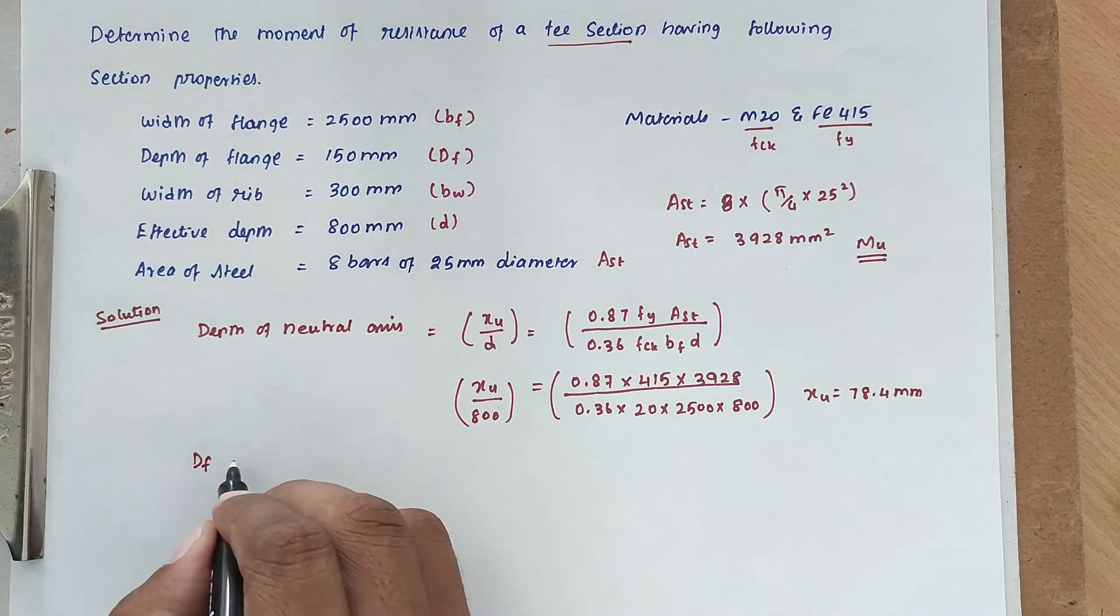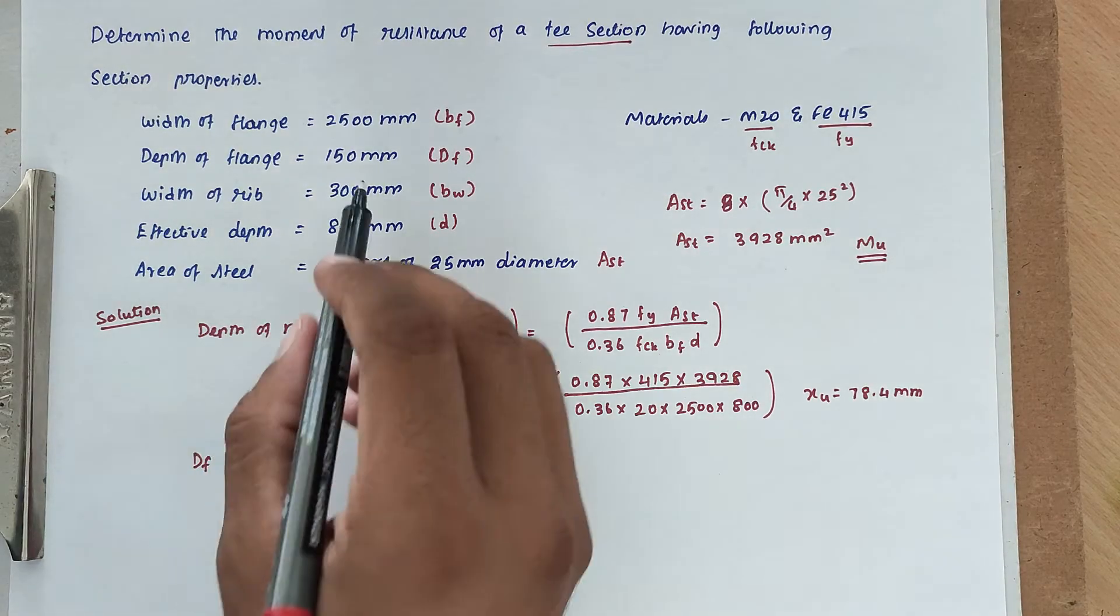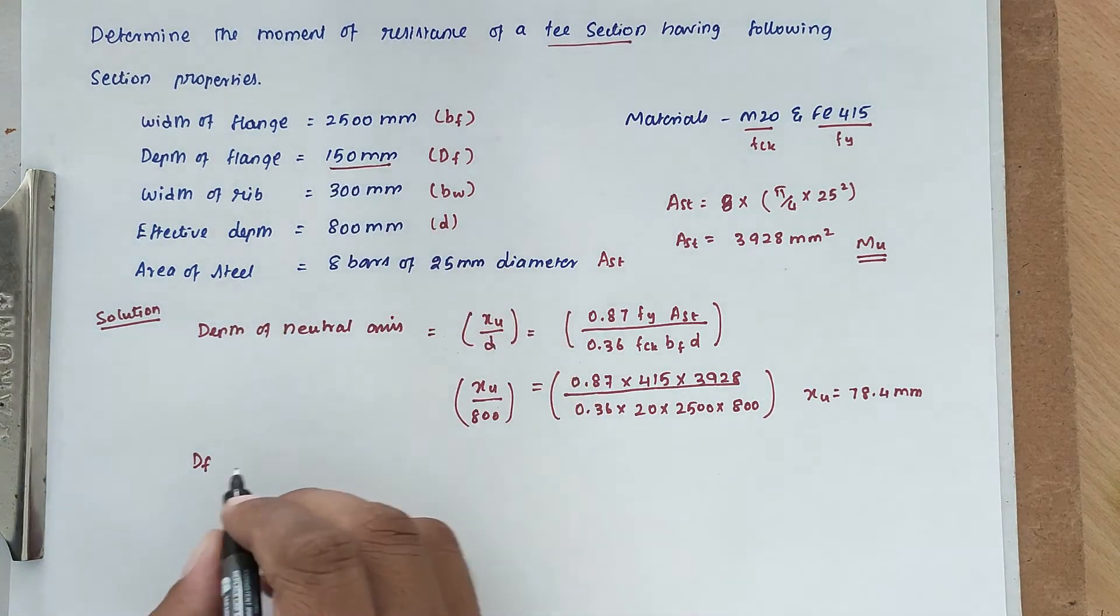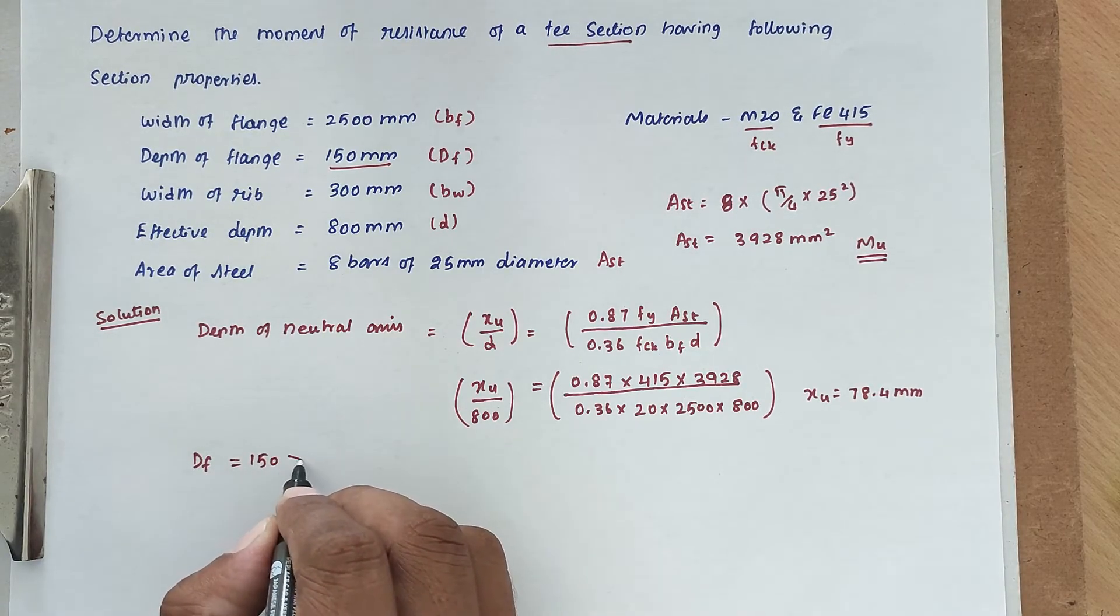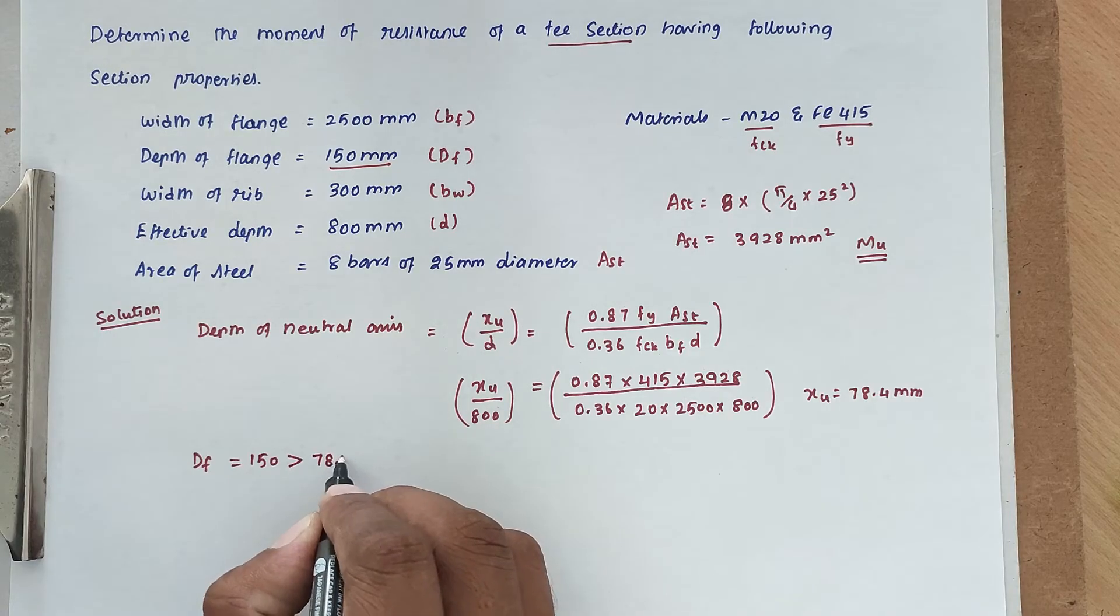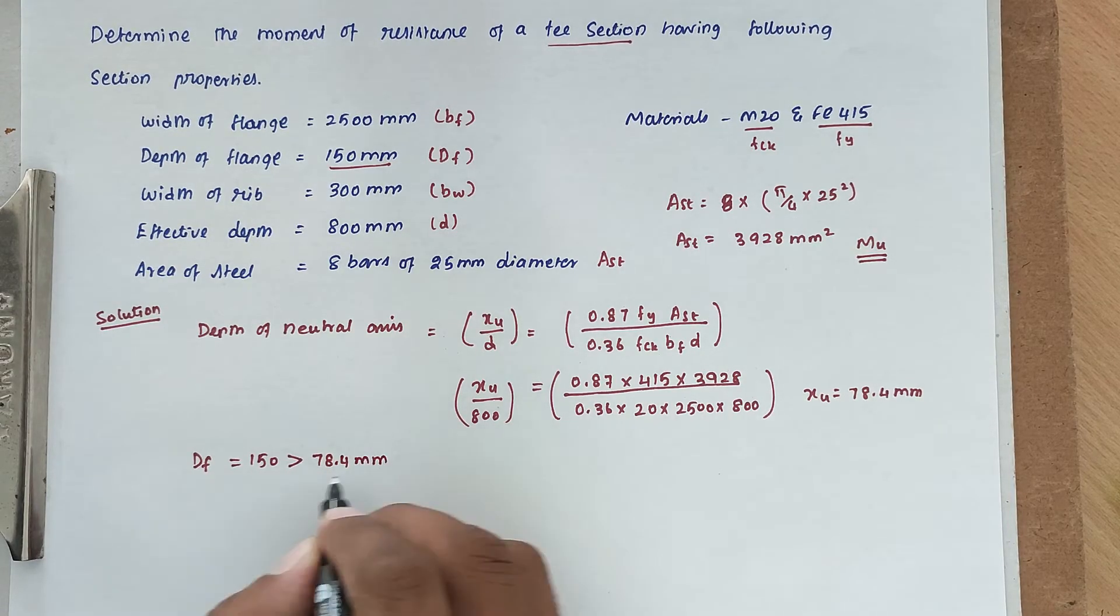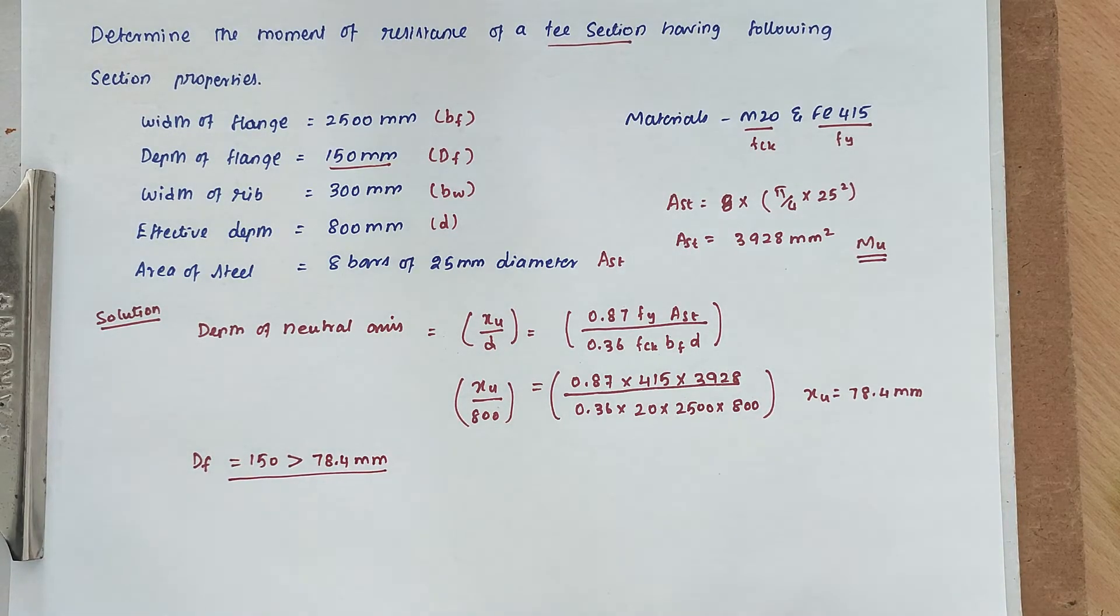Now the depth of flange is 150 mm. So the depth of flange, 150 mm, is greater than 78.4 mm. So this is under-reinforced section.